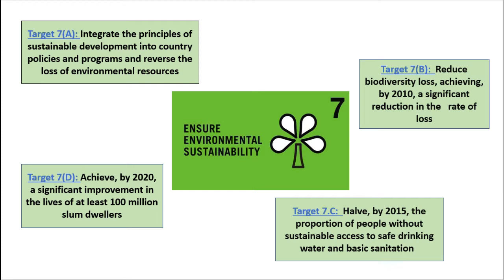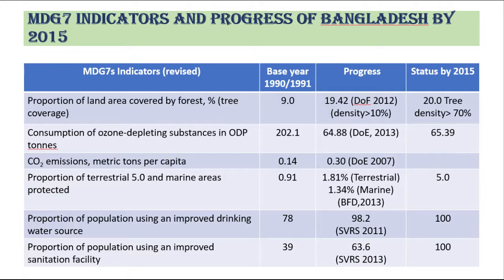In MDG 7 there are a number of different environmental targets. Target 7A is to reverse the loss of environmental resources, which slows down deforestation. Target 7B is to reduce biodiversity loss. Target 7C is to halve by 2015 the proportion of the population without sustainable access to safe drinking water. From this table we can easily understand the progress of Bangladesh in achieving MDG 7.